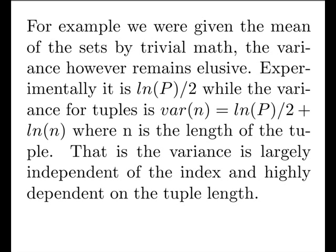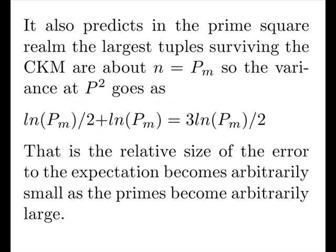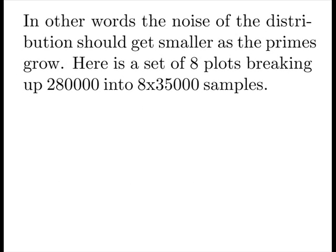So since we're measuring at the prime, and we predict the number of tuples, the largest tuple length surviving is on order P, the variance of that set should go as about three halves of the log. That is, the relative size of the error to the expectation becomes arbitrarily small as the primes become arbitrarily large. In other words, the noise of the distribution should get smaller as the primes grow. It should get smoother.